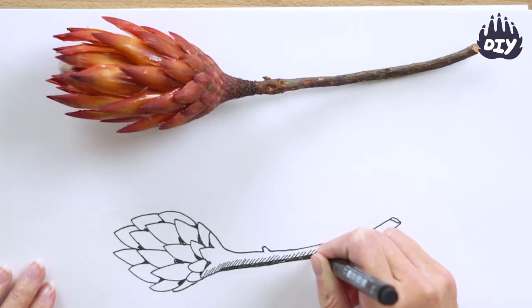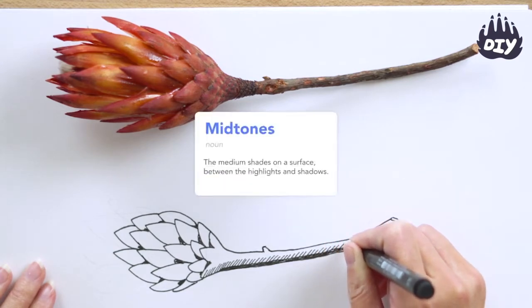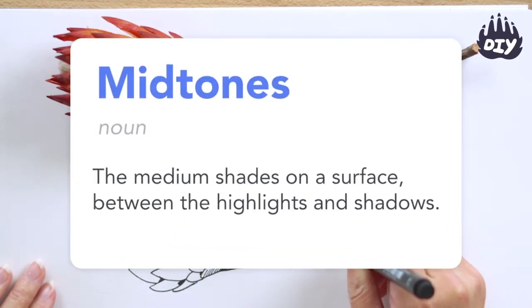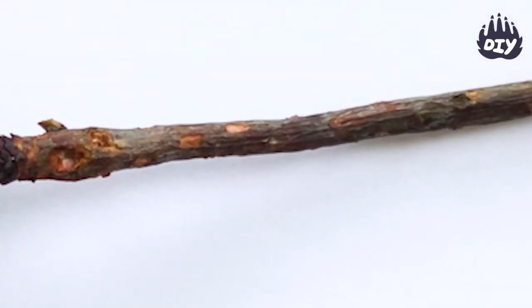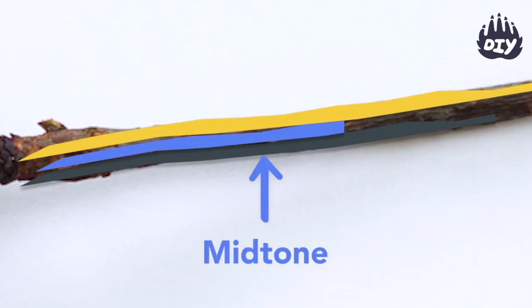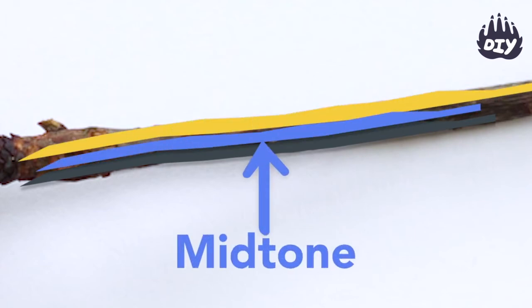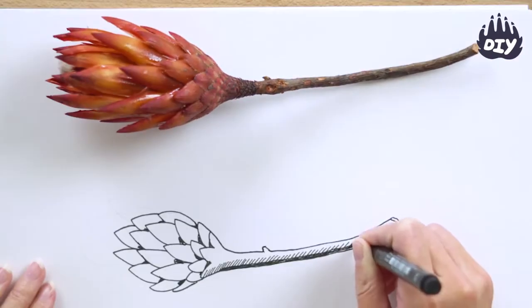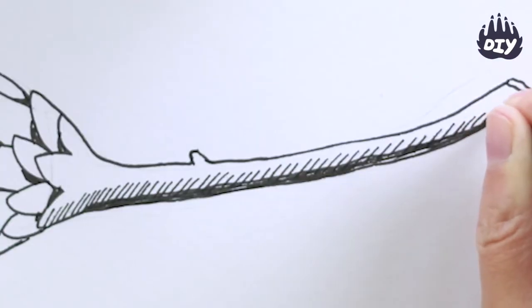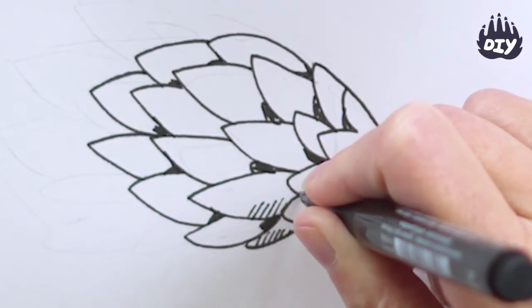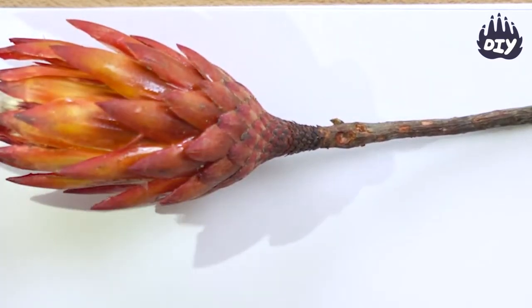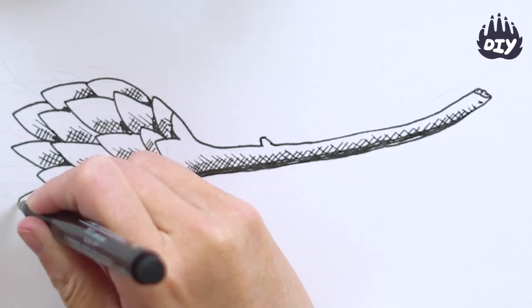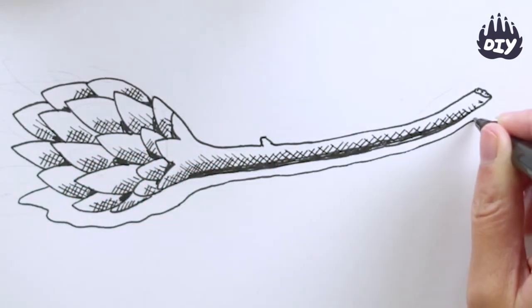The area between the lightest and darkest parts are the midtones, and I'll lightly shade those in from what I observe. I also want to remember to look at the shadow my object casts and shade that in, so my object looks like it's grounded and not floating through space.